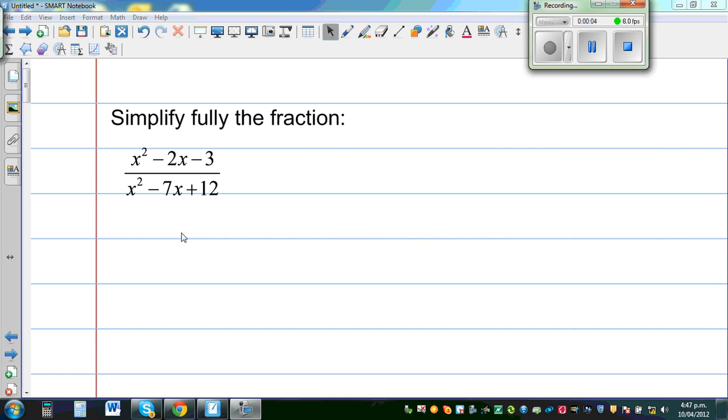Simplify fully the fraction: x squared minus 2x minus 3 over x squared minus 7x plus 12.